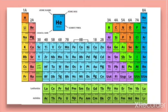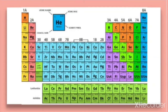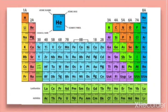Regarding metallic and non-metallic character, elements on the left hand side are more metallic compared to those on the right. Metallic character decreases from left to right but increases from top to bottom. Elements on the extreme left are more metallic, while elements on the right are usually non-metallic.